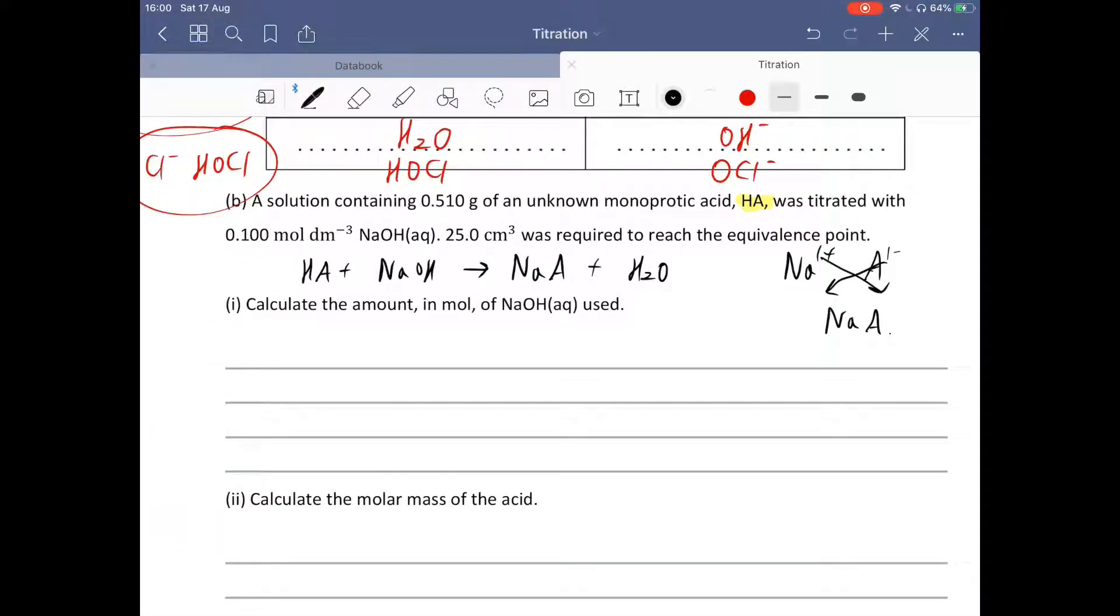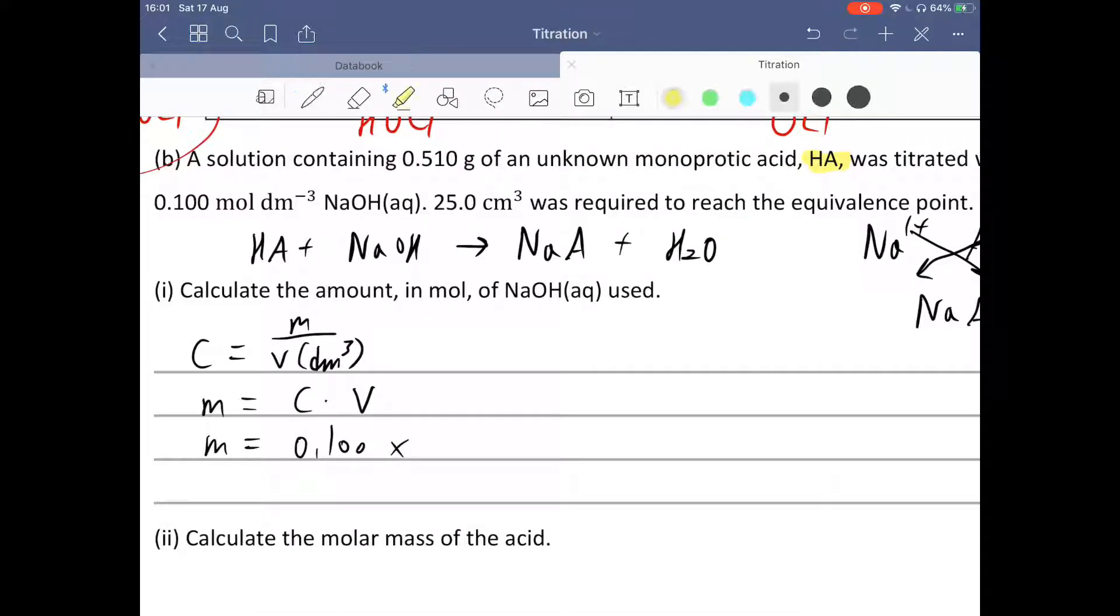Part 1, calculate the amount in mole of sodium hydroxide solution used. You should know the equation, concentration equals mole divided by volume in dm³. So mole equals concentration times volume. The mole of sodium hydroxide equals 0.100 times the volume, 25.0 cm³, so 25.0 divided by 1,000. That is 2.50 times 10 to the power of negative 3 mole.